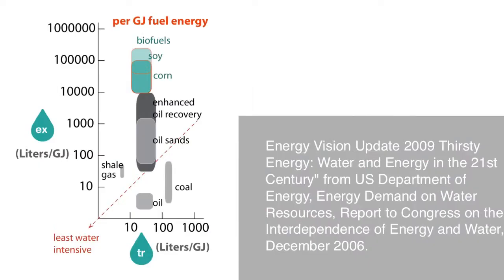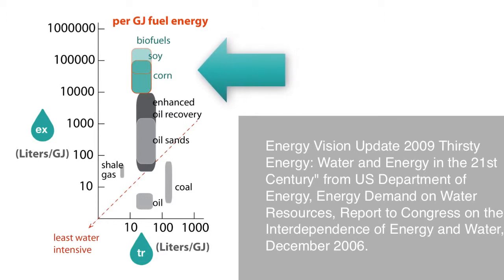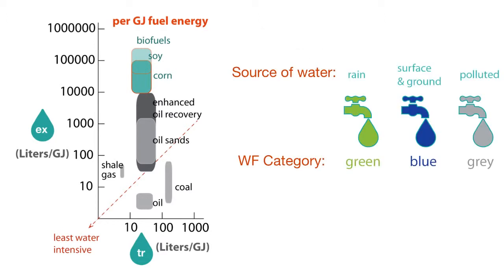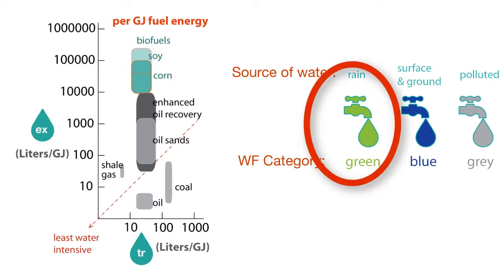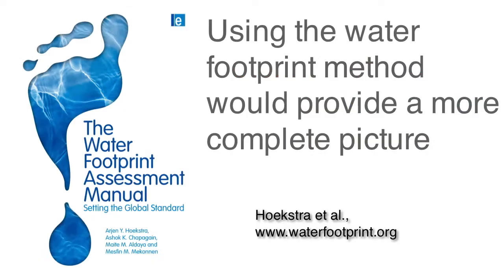When we consider a comparison of liquid fuels, we see that the most water-intensive fuels are the biofuels. For these fuels, the majority of the water is required in the growth stage for the soy and corn crops. As with the case for electricity, it's important to consider not just the quantity of water used for fuel production, but also the impact of the water use. Again, the water footprint tool would be helpful.